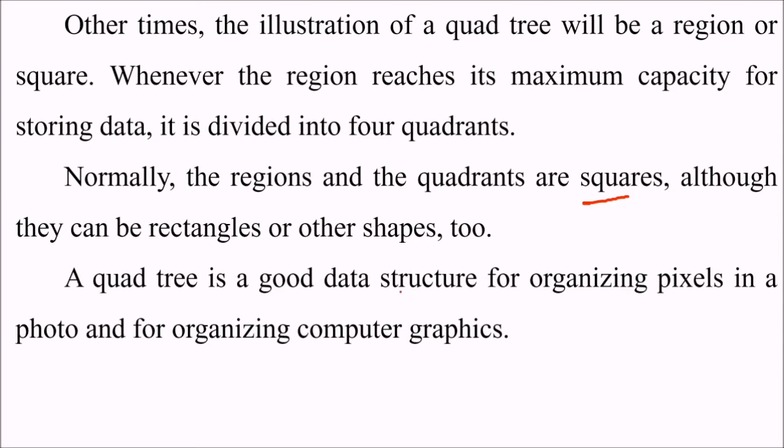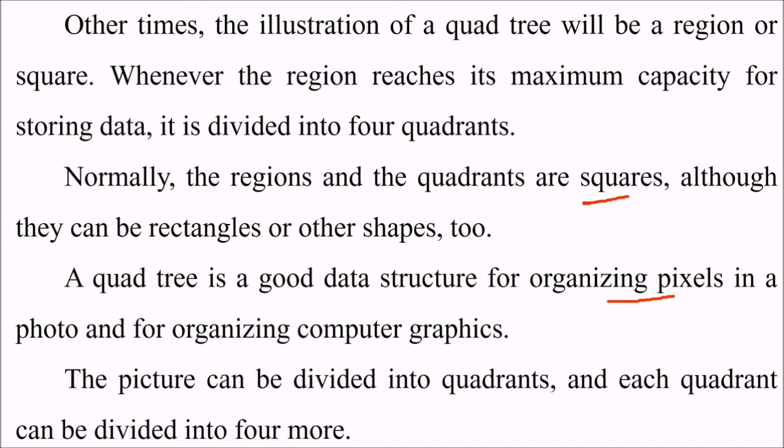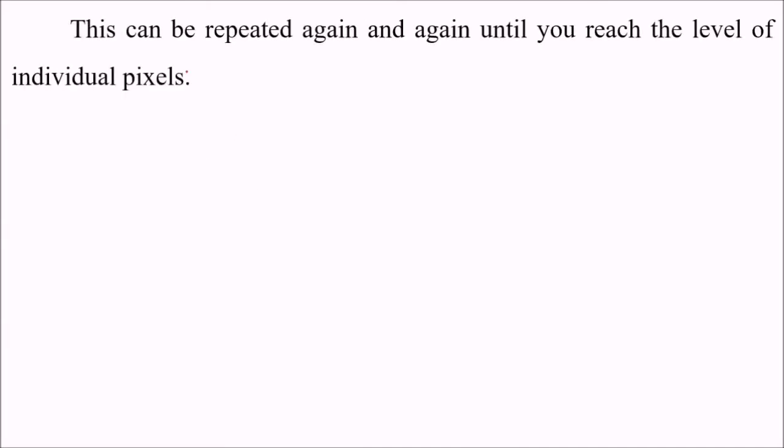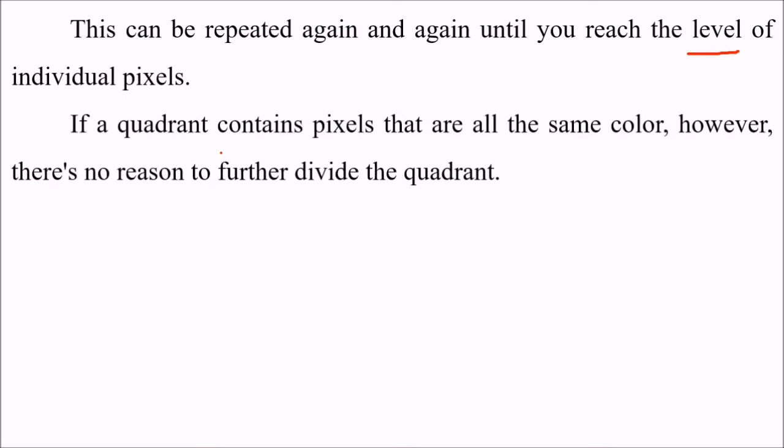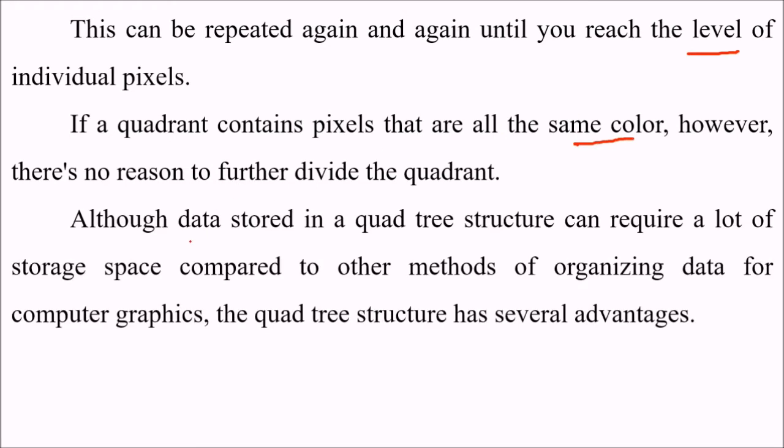A quadtree is a good data structure for organizing pixels in a photo or for organizing computer graphics. The picture can be divided into quadrants, and each quadrant can be divided into four more. This can be repeated again and again until you reach the level of individual pixels. If a quadrant contains pixels that are all the same color, there is no reason to further divide the quadrant.